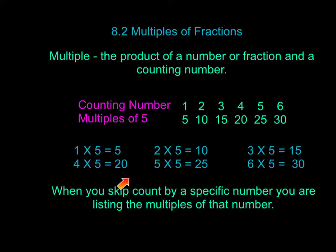When you skip count by a specific number, you're listing the multiples of that number. So if we were to count by 3s and go 3, 6, 9, 12, 15, 18 — we are counting by 3 and we're listing off the multiples of 3.